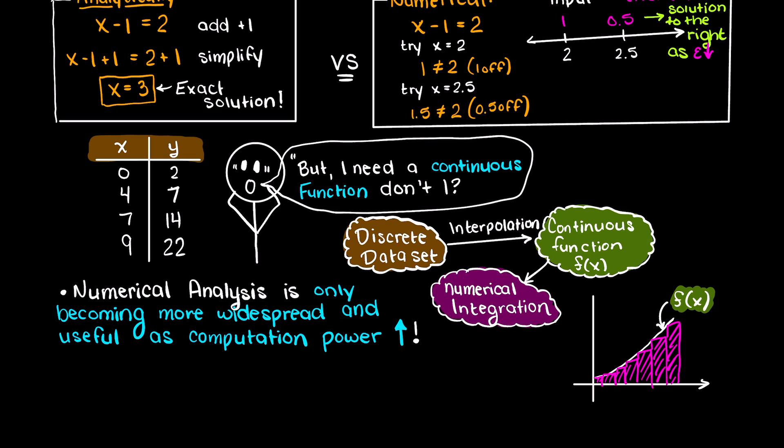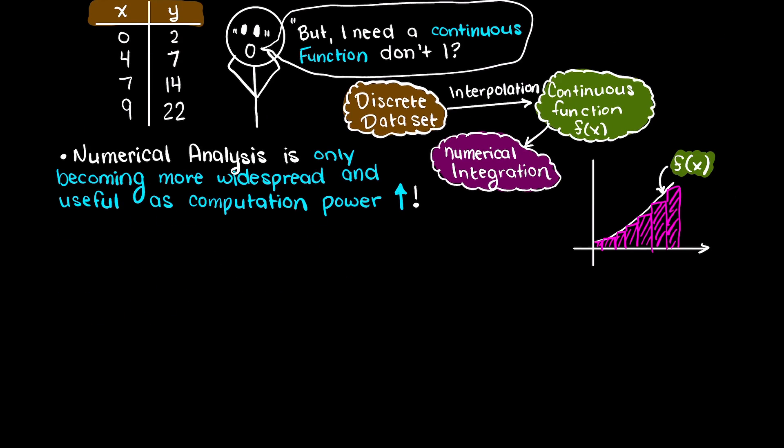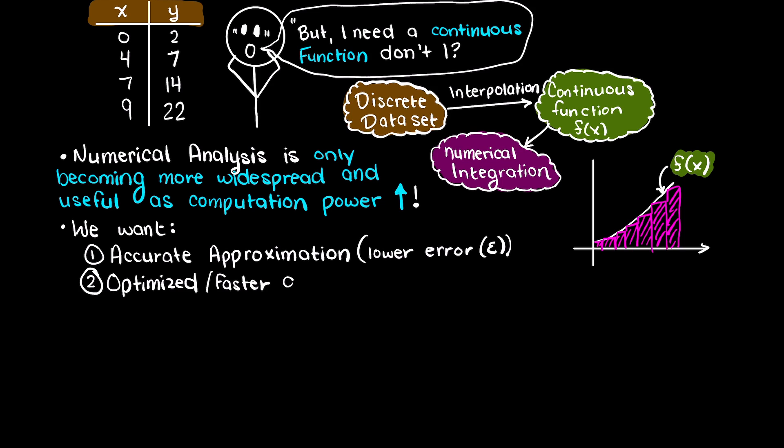In summary, we use numerical methods to compute approximate answers to math problems, and although our answers are approximate, we want them to be accurate and as computationally easy as possible to ensure our solution is as close to the exact answer and be found quickly.